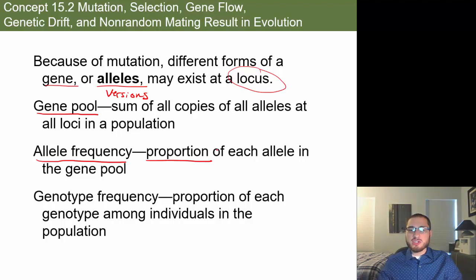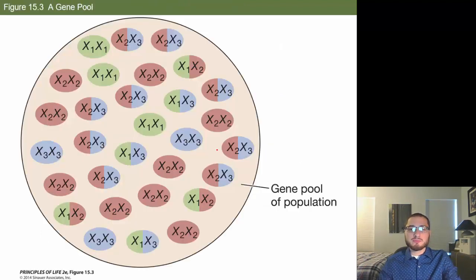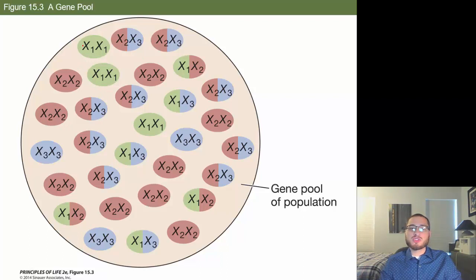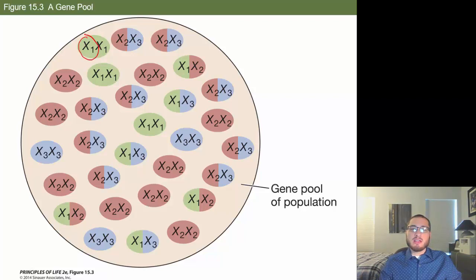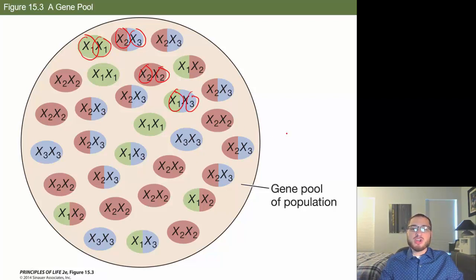Genotype frequencies refer to the proportion of each genotype among individuals in the population. If we look at chromosomes in microscopic organisms that reproduce with two parents — getting one chromosome from each parent — you can end up with combinations like 1-1, 2-3, 2-2, 1-3, and so on. All those options of chromosomes you can get constitute the gene pool. Gene pools are discussed at the population level.